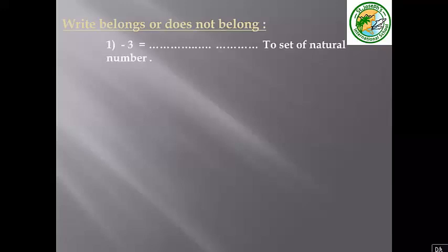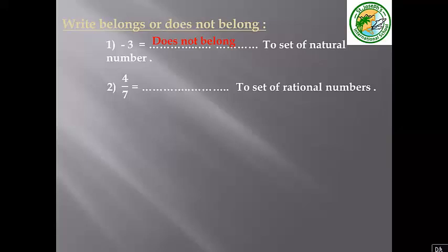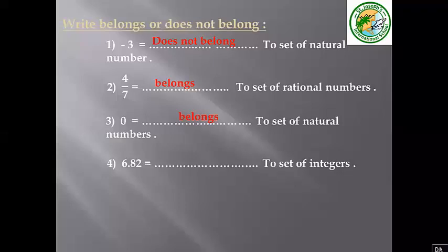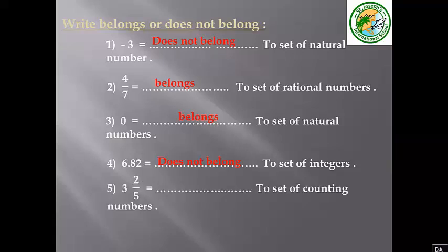Write 'belongs' or 'doesn't belong.' Negative 3 doesn't belong to the set of natural numbers, because natural numbers start with 0, 1, 2, 3, 4, without ending. 4 over 7 belongs to the set of rational numbers, because rational numbers can be written as a fraction. 0 belongs to the set of natural numbers — it is the smallest natural number. 6.82 doesn't belong to the set of integers, because integers do not include decimals or fractions. 3 and 2 over 5 doesn't belong to the set of counting numbers, because it is a fraction.